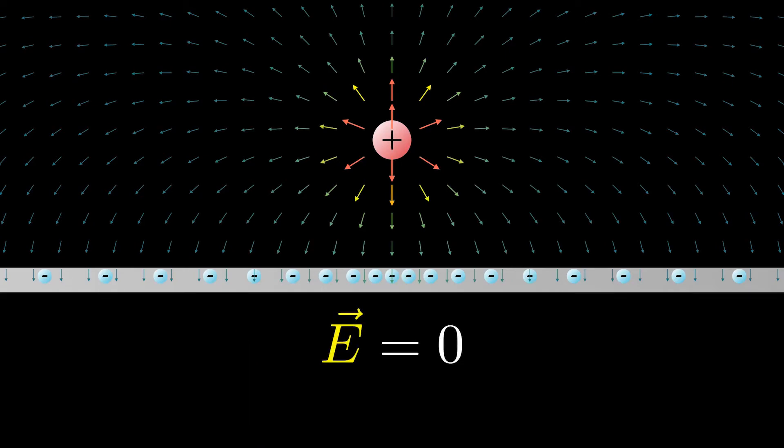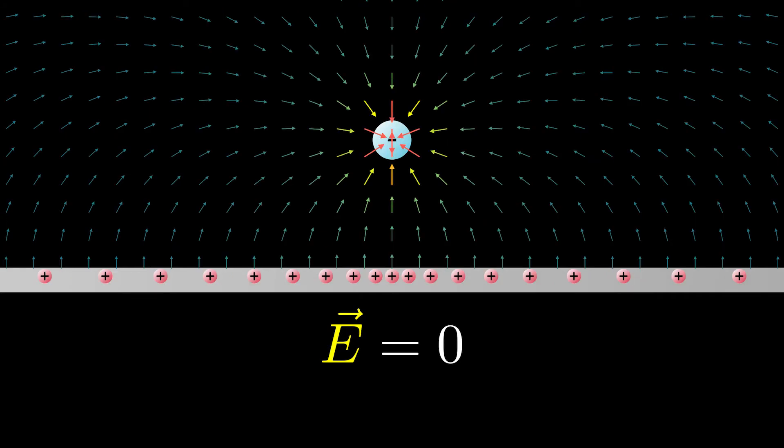So there can't be an electric field because there is no place for the path to end. This is known as electrical shielding. And we could also consider a negative charge instead of a positive charge, and everything would be the same, just all the directions and signs flipped like so.